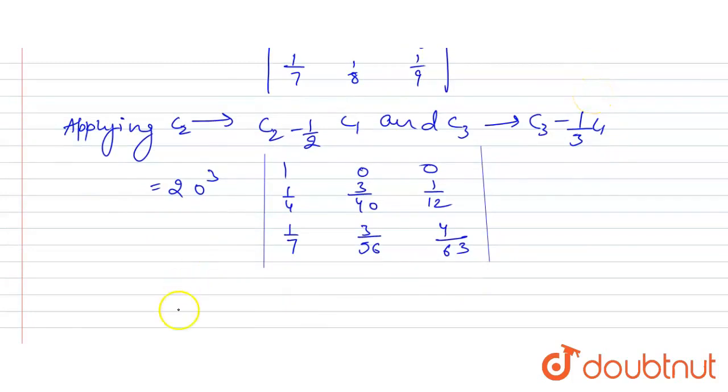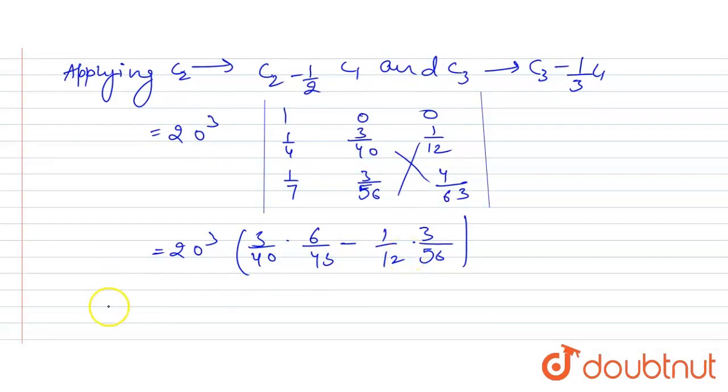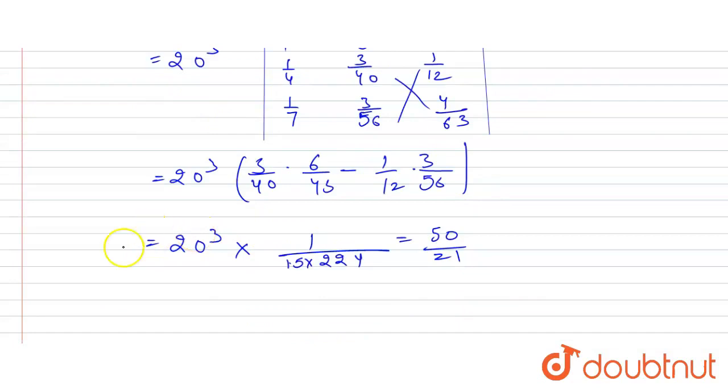And then from here, after we will expand this, we will get 20 cube, 3 by 40, into 6 by 43, minus 1 by 12, into 3 by 56. So it means 20 cube will be here, into 1 by 15, into 22, which will be equals to 50 by 21.